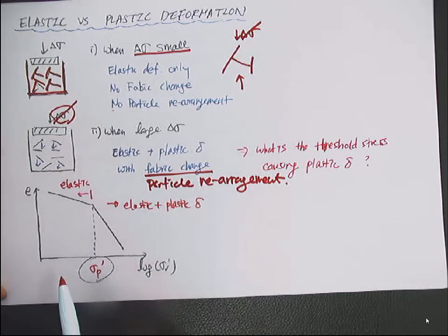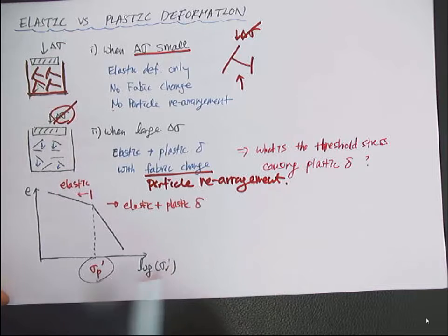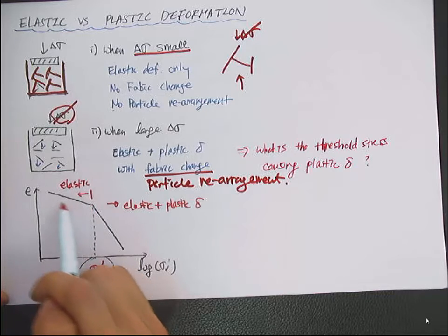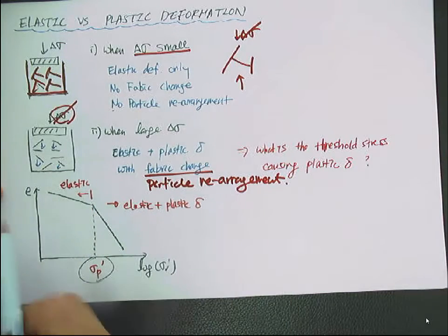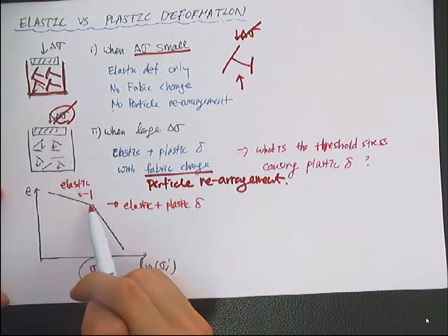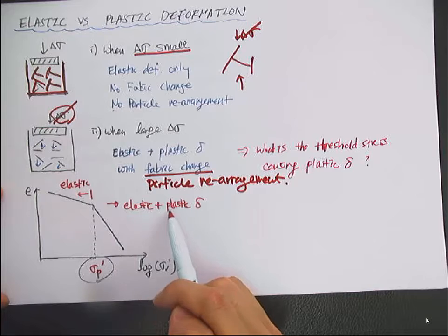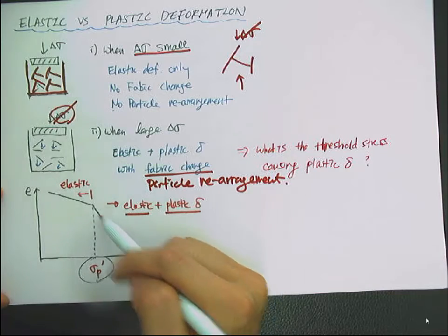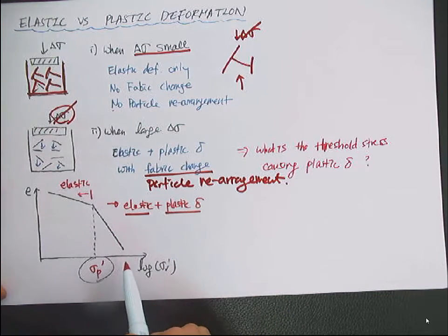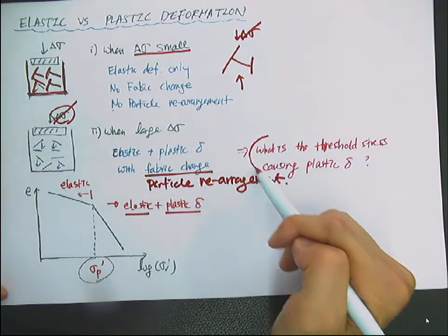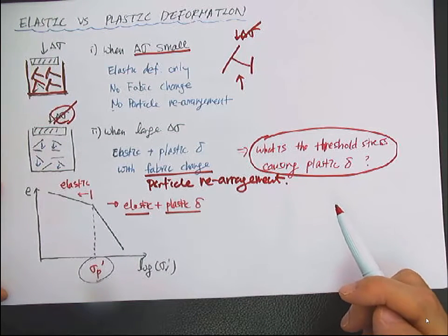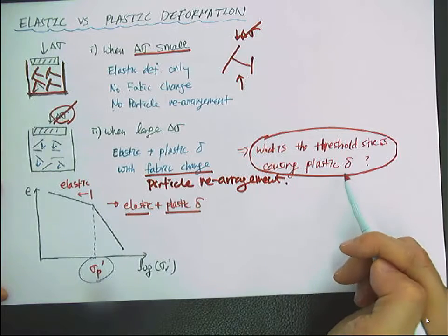If you plot it on an e versus sigma V prime graph, when you have a small loading, the deformation is small but recoverable when you remove delta sigma. When you exceed some threshold value, you'll have plastic deformation, which is permanent and large. At that point, there is a more rapid change in void ratio for a given loading. So what is the threshold stress causing the plastic deformation?